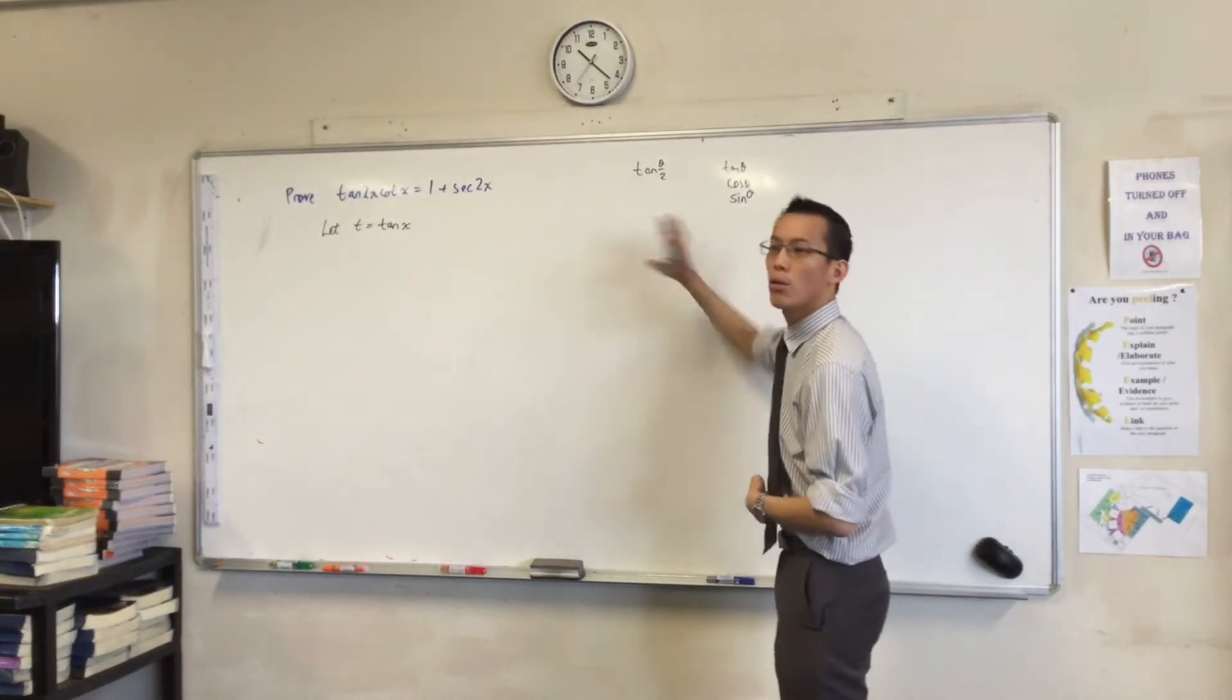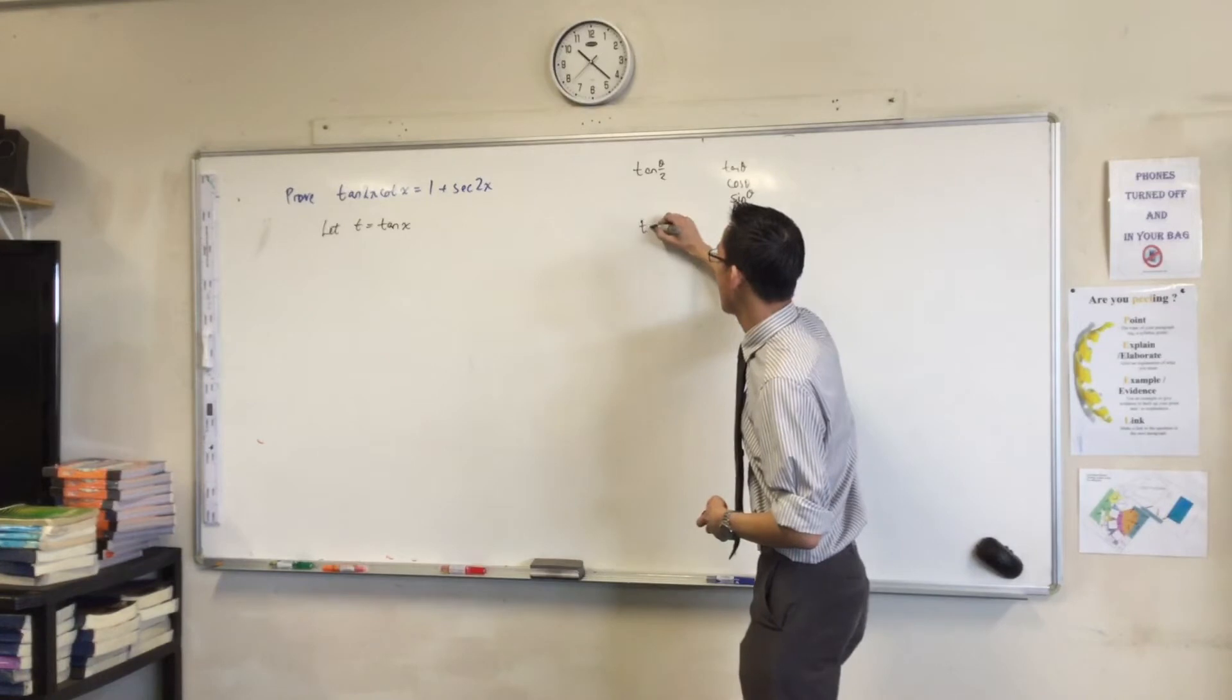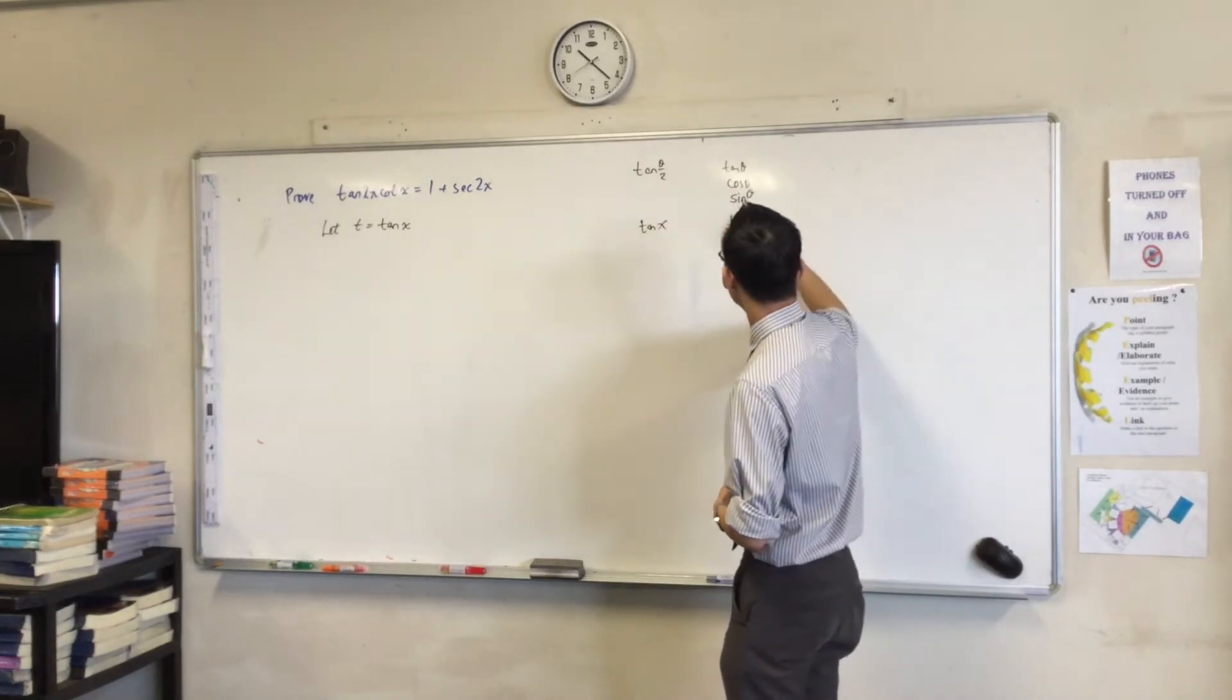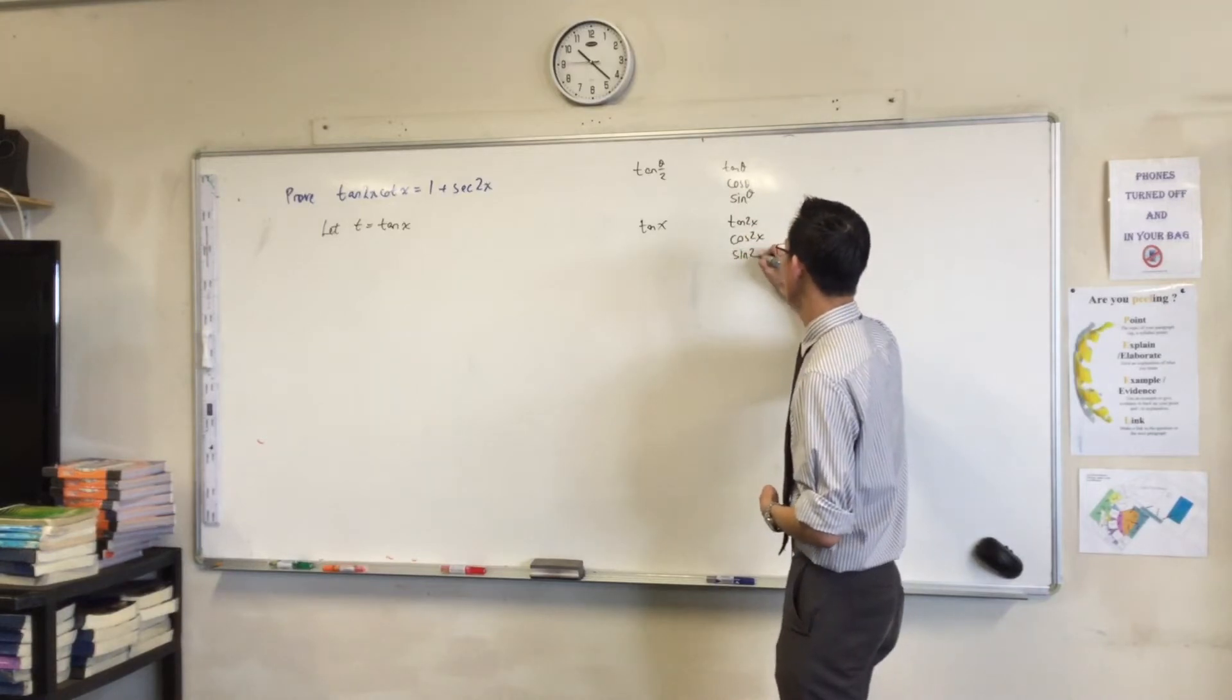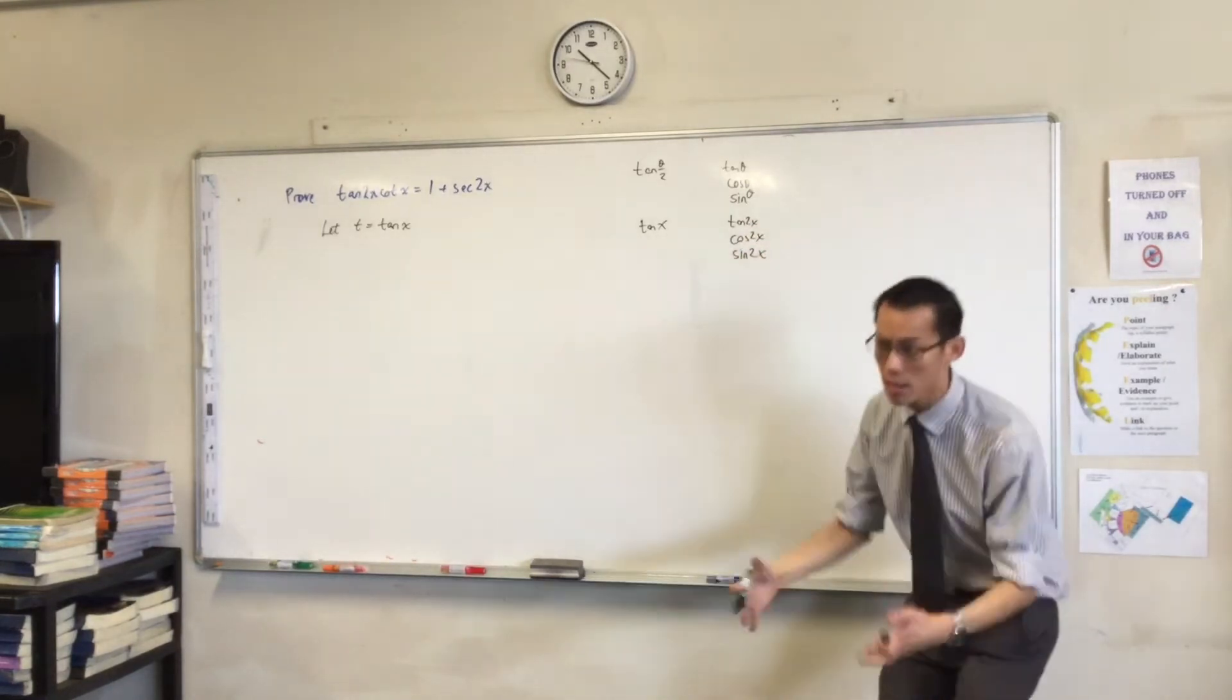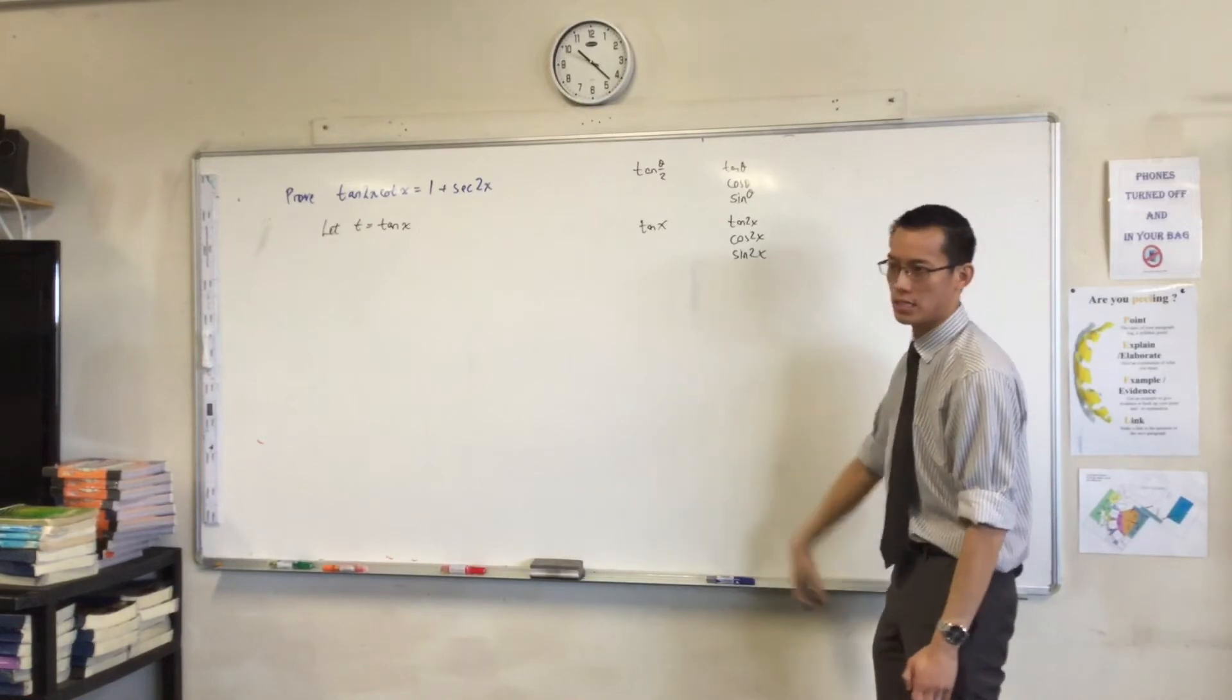But if I just double all the angles: tan x, tan 2x, cos 2x, sine 2x, it's the same t-results. It's just wearing different clothes.